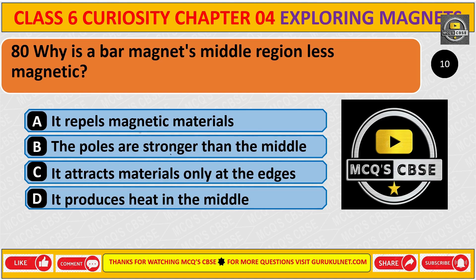Why is the bar magnet's middle region less magnetic? The correct answer is B. The poles are stronger than the middle.